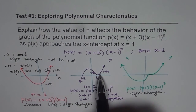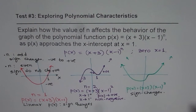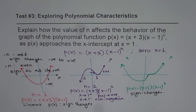When n is odd, the sign will change at the x-intercept; when n is even, it will not change — the graph will bounce back. That is how you can describe the behavior of the graph as x approaches the x-intercept. I hope that is clear. Thank you and all the best.